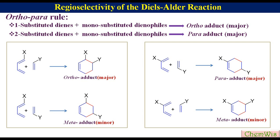This rule is true for almost every combination of electron-withdrawing and electron-donating groups, except one case where X and Y both are electron donors. In this case, there is marginal meta selectivity. For more clarification, let's have some examples.